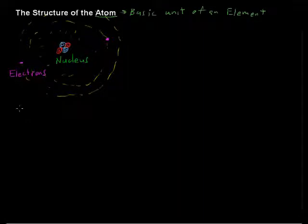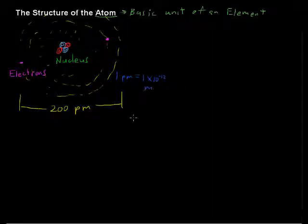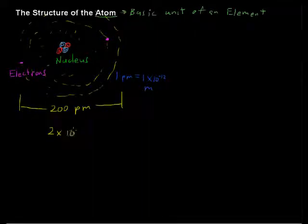So for example, the size of the atom is 200 picometers. That's the diameter or distance across one atom. And one picometer, this tiny unit of measure, is 1 times 10 to the negative 12 meters. So I could rewrite that as 2 times 10 to the negative 10th meters across an atom.